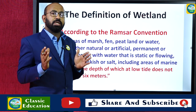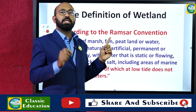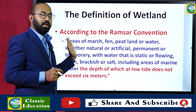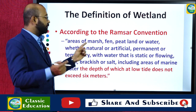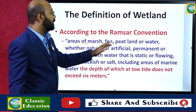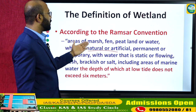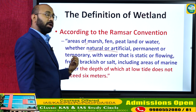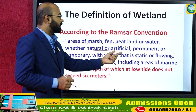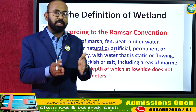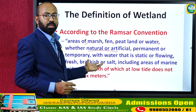According to the Ramsar Convention, a wetland is defined as any area of marsh, fen, peatland, or water — whether natural or artificial, permanent or temporary — with water that is static or flowing, fresh, brackish, or salt. The only requirement is that the depth of water should not exceed six meters.